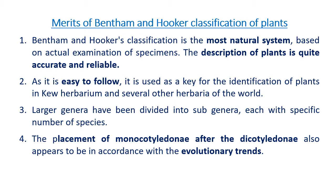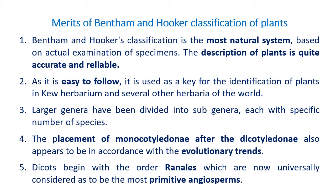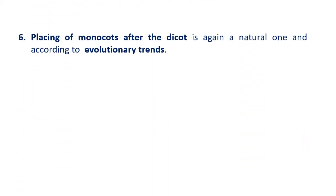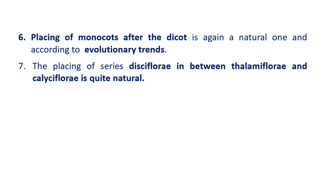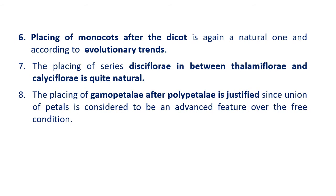The placement of monocotyledons after the dicotyledons appears to be in accordance with evolutionary trends. Dicots begin with the order Ranales, which are now universally considered the most primitive angiosperms. The placing of series Disciflorae in between Thalamiflorae and Calyciflorae is quite natural. The placing of Gamopetalae after Polypetalae is justified, since union of petals is considered an advanced feature over the free condition.